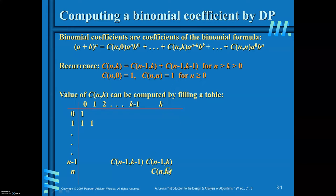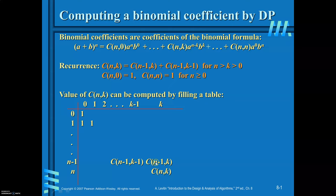In order to find C(n,k), you need to know C(n-1,k) and C(n-1,k-1). Looking at the table, to find a value you need the value in the previous row in the same column, and also the value in the previous row and previous column. Adding these two values gives you C(n,k).